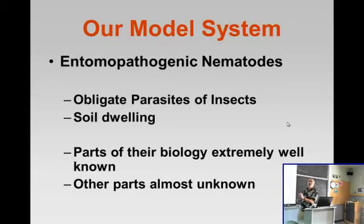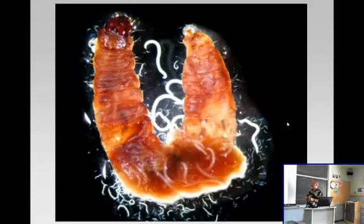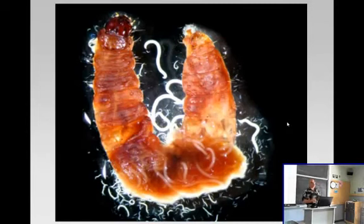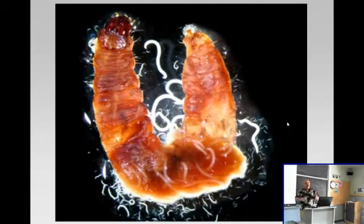There are parts of their biology that are really very well-known because those were necessary to figure out for biological control, and there are other parts that are really poorly known — those are some of the things I'm going to talk about today. Here's a picture of an insect that's been parasitized by pathogenic nematodes. The cool thing about working with parasites is that you get all kinds of really gross pictures, especially for lunch.